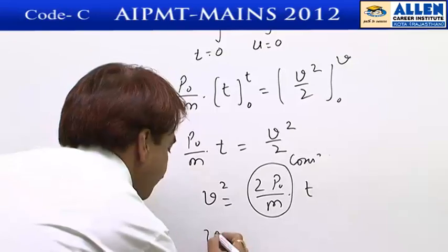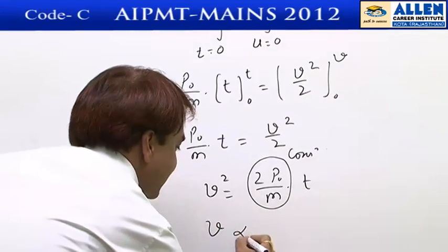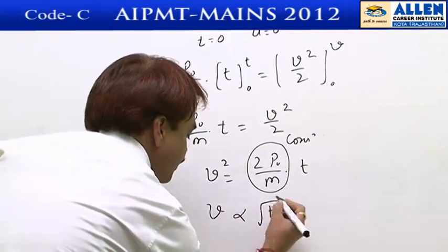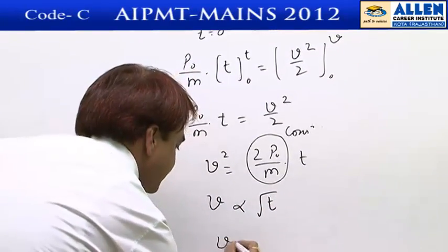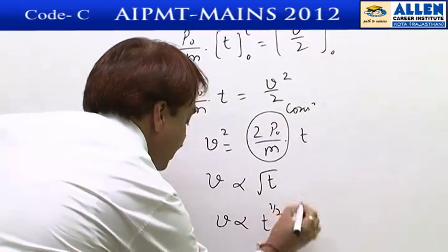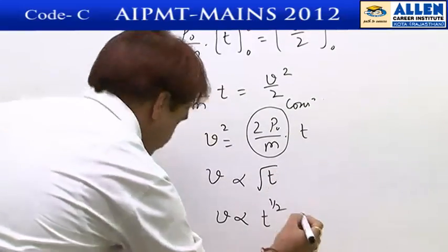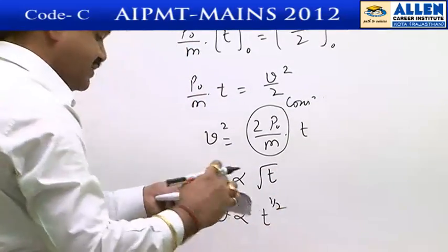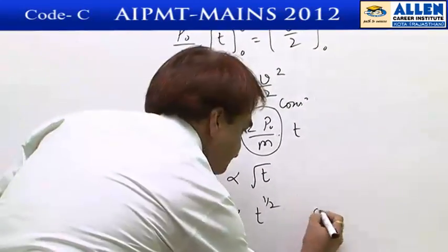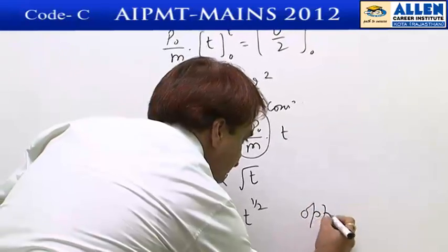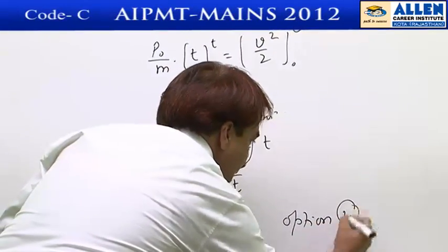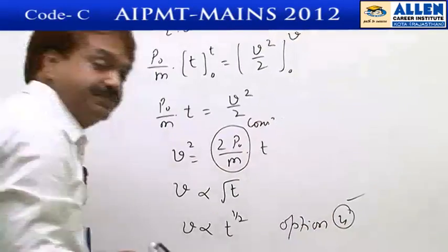Since 2P naught by m is a constant term, V is directly proportional to the square root of time, i.e., t to the power half. The correct option is the fourth one.